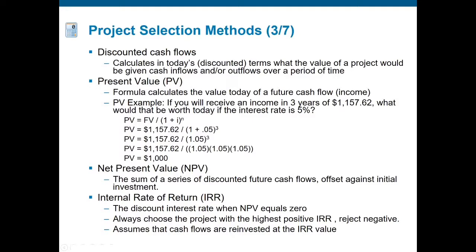The internal rate of return is where we calculate the interest rate needed to get our net present value to zero. Since we still had $500 of net present value in the previous example, we would have to increase the interest rate to reduce the amount of money remaining — a much higher interest rate to get NPV down to zero. We always want to choose a project with the highest positive IRR; a negative IRR is not a good situation. Cash flows are reinvested at the IRR rate.